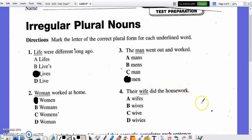Number four, their wife did the housework. What's the irregular plural for wife? A, wives? F-E-S. B, wives? I-V-E-S. C, wife? I-V-E. Or D, wives? I-V-I-E-S. Mark the correct response now. The correct answer is B, wives, W-I-V-E-S. That's the irregular plural for one wife.